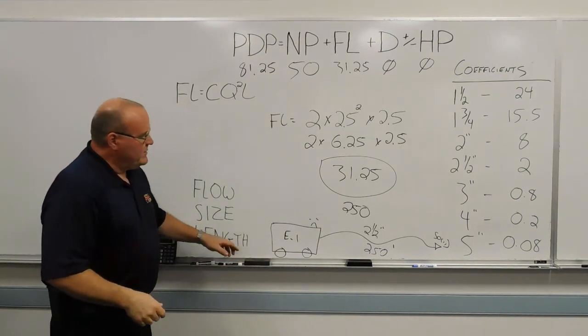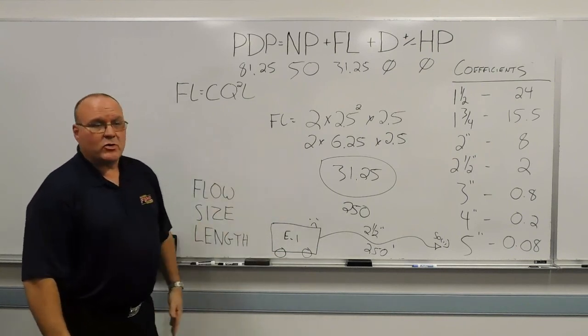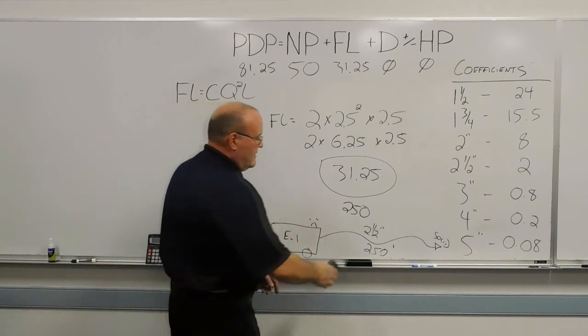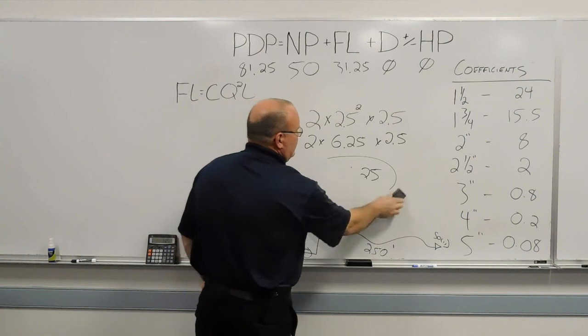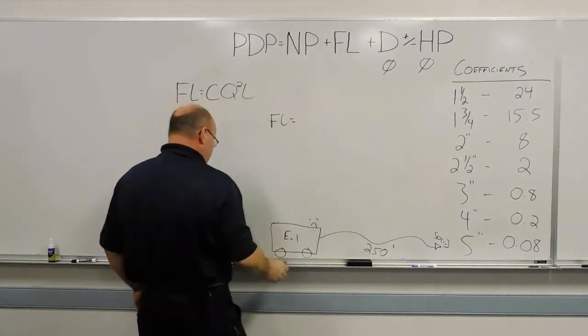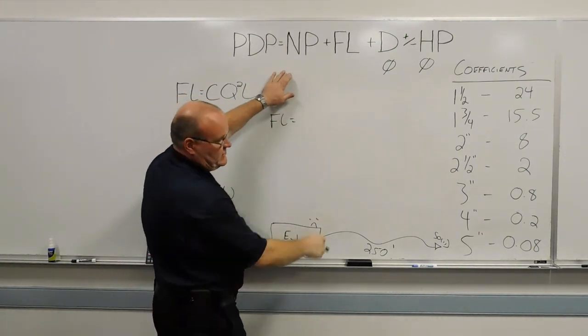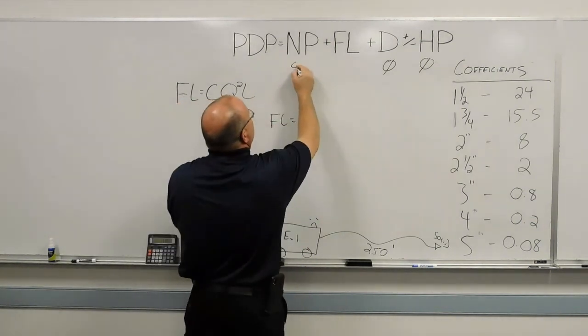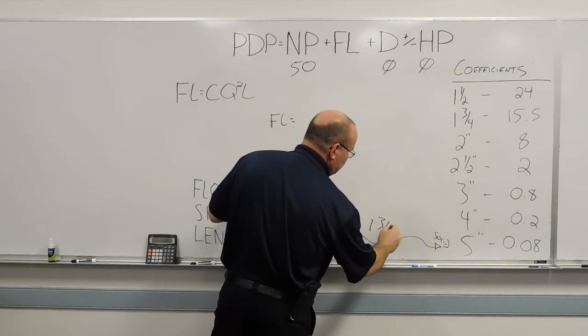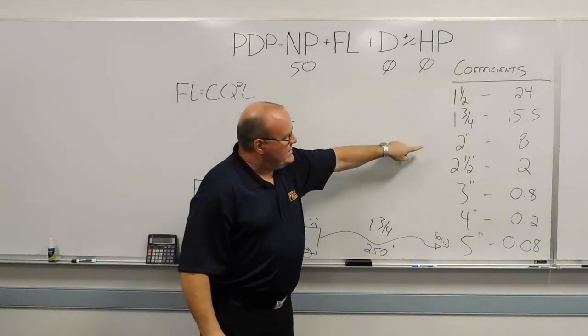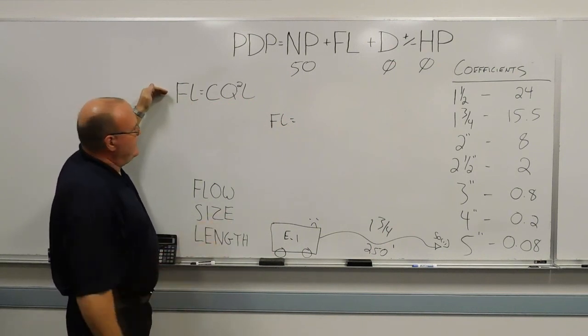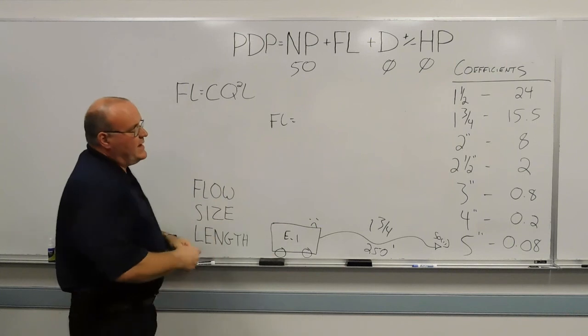We'll do one more example. And this time we're going to change our hose size and use inch and three-quarter. So same engine, we'll keep the same length, and we'll keep the same nozzle. So our nozzle pressure being the same, if it's a solid stream hand line, 50 pounds. We're going to change that from 2.5 to inch and three-quarter. And then our inch and three-quarter coefficient is 15.5. So friction loss, using the coefficient method, C, Q², L. The C part of that is 15.5.